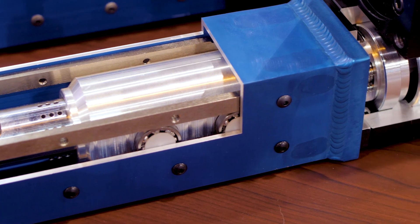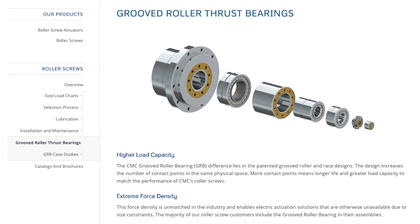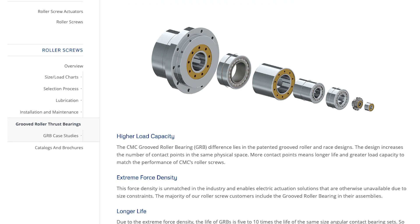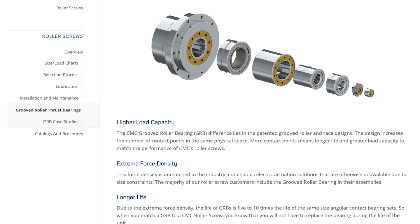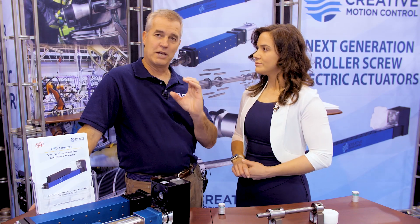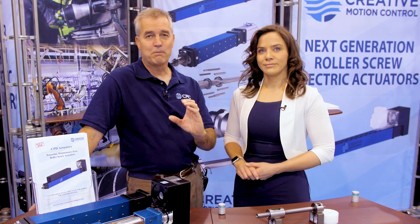And we have a unique component, our groove roller bearing, that allows us even more force density than other roller screw actuator manufacturers. So if you have a certain amount of space to deal with your hydraulics and you need to fit a roller screw actuator in there, we can put more force in that space than anybody else can in the market.